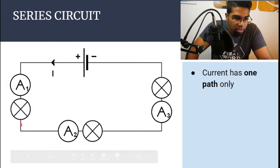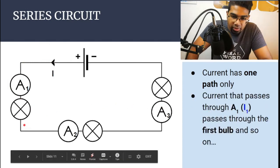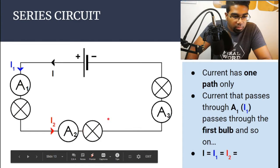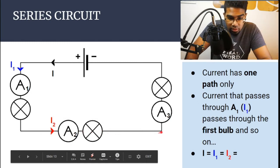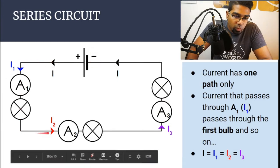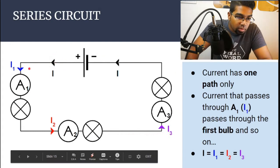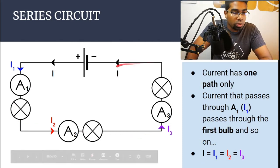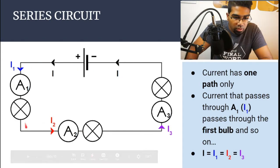The current flows through ammeter A1 — that current is labeled I1 — which is the same current that flows through the first bulb. Then the same current passes through A2 and the second bulb (I2), and then through A3 and the third bulb (I3), before going back to the negative terminal. The current is the same the whole way because it only has one path and never splits. So the current in a series circuit is the same across all components.